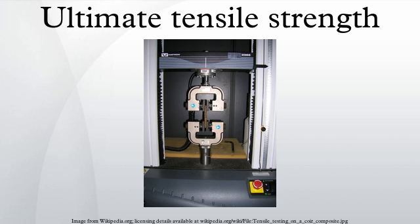For many applications, plastic deformation is unacceptable and is used as the design limitation. After the yield point, ductile metals will undergo a period of strain hardening, in which the stress increases again with increasing strain, and they begin to neck as the cross-sectional area of the specimen decreases due to plastic flow. In a sufficiently ductile material, when necking becomes substantial, it causes a reversal of the engineering stress-strain curve. This is because the engineering stress is calculated assuming the original cross-sectional area before necking. The reversal point is the maximum stress on the engineering stress-strain curve, and the engineering stress coordinate at this point is the ultimate tensile strength, given by point one.